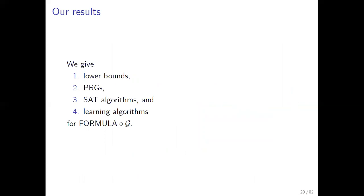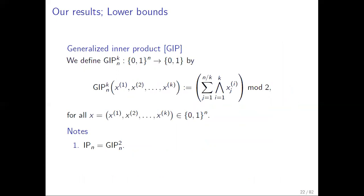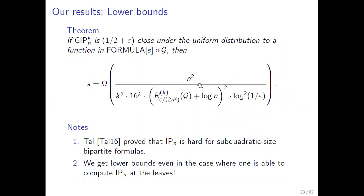Our results: lower bounds, PRG, SAT algorithms, and learning algorithms. The lower bounds are about generalized inner product, which as the name suggests, generalizes standard inner product. These lower bounds are around quadratic and depend on the randomized k-party communication complexity of the class G. If this is small, you get a better lower bound — close to quadratic. Avish et al. showed that the standard inner product is hard for sub-quadratic size bipartite formulas.